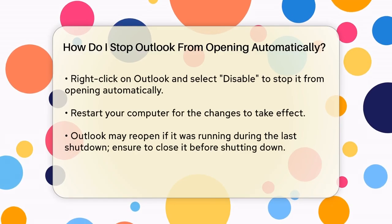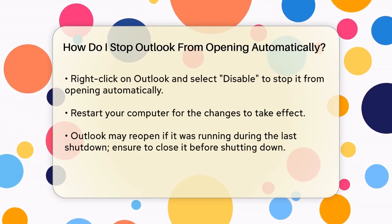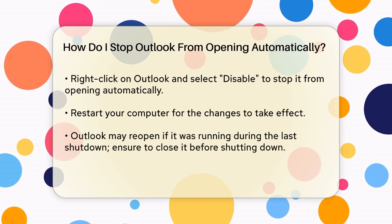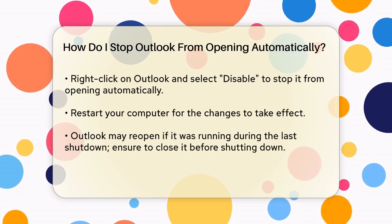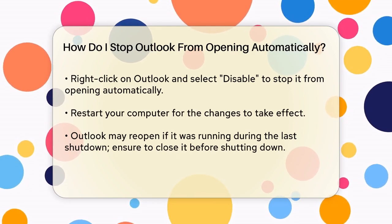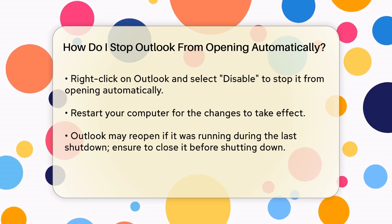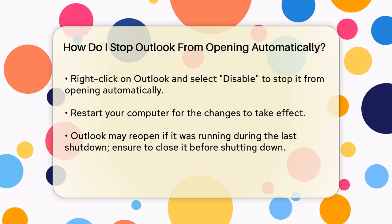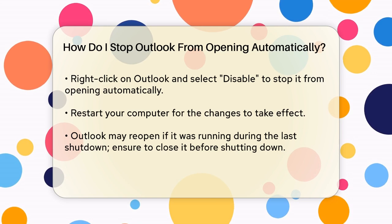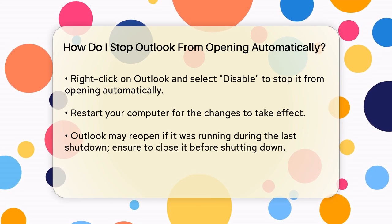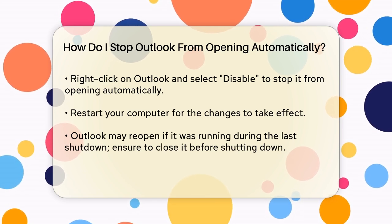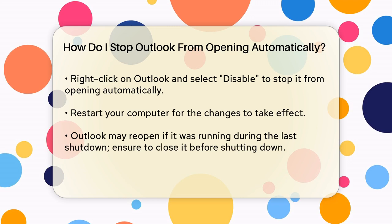This should prevent Outlook from starting automatically. However, don't forget to restart your computer after making this change, as it won't take effect otherwise. Another reason Outlook might be opening automatically is due to a Windows feature that reloads programs that were running when you shut down your computer. To avoid this, make sure to close Outlook before shutting down or restarting your computer.